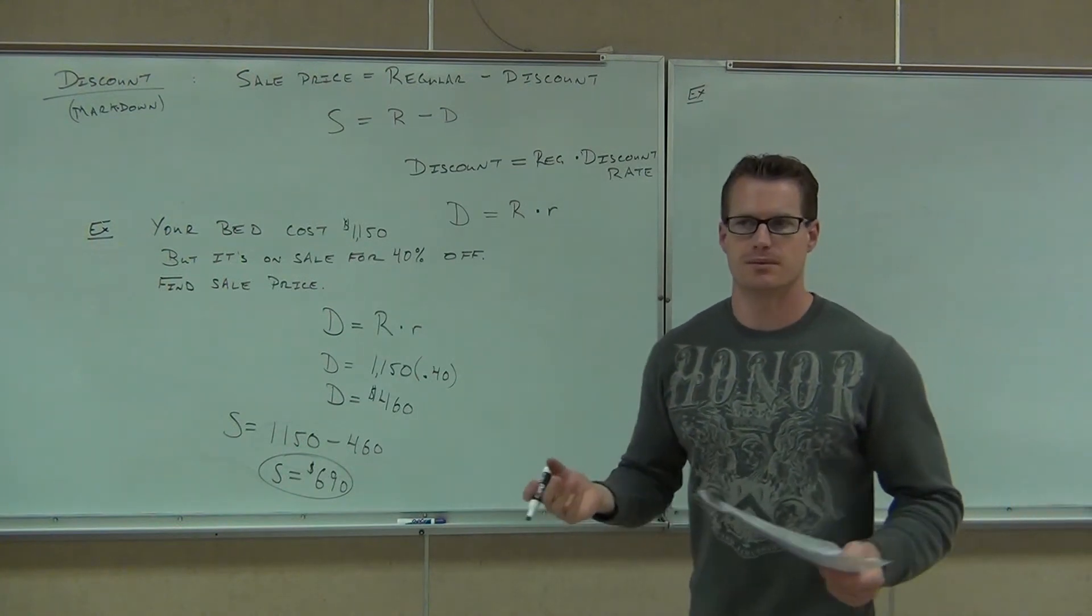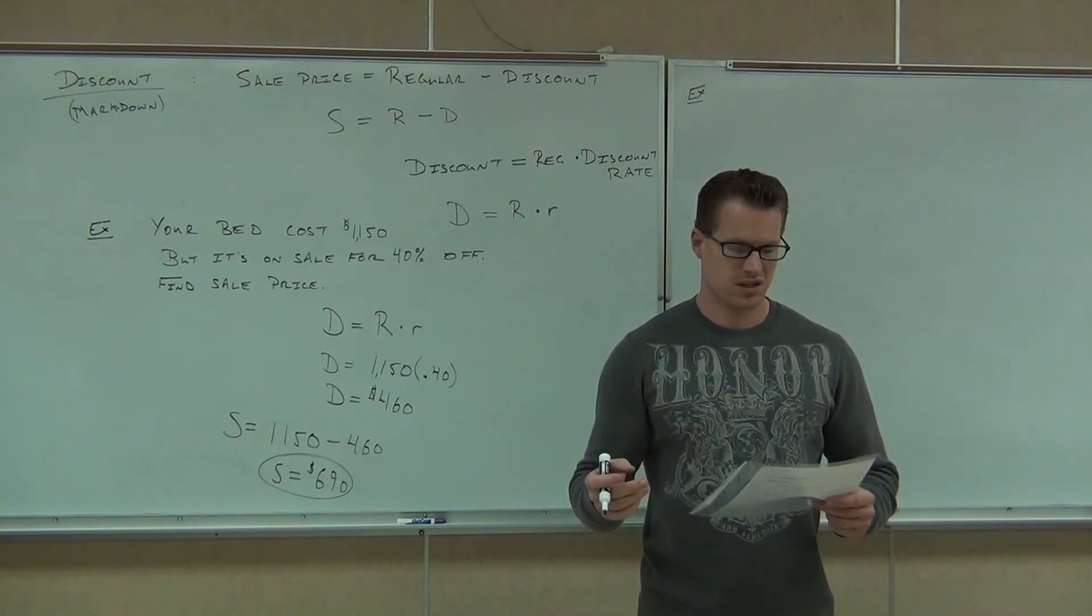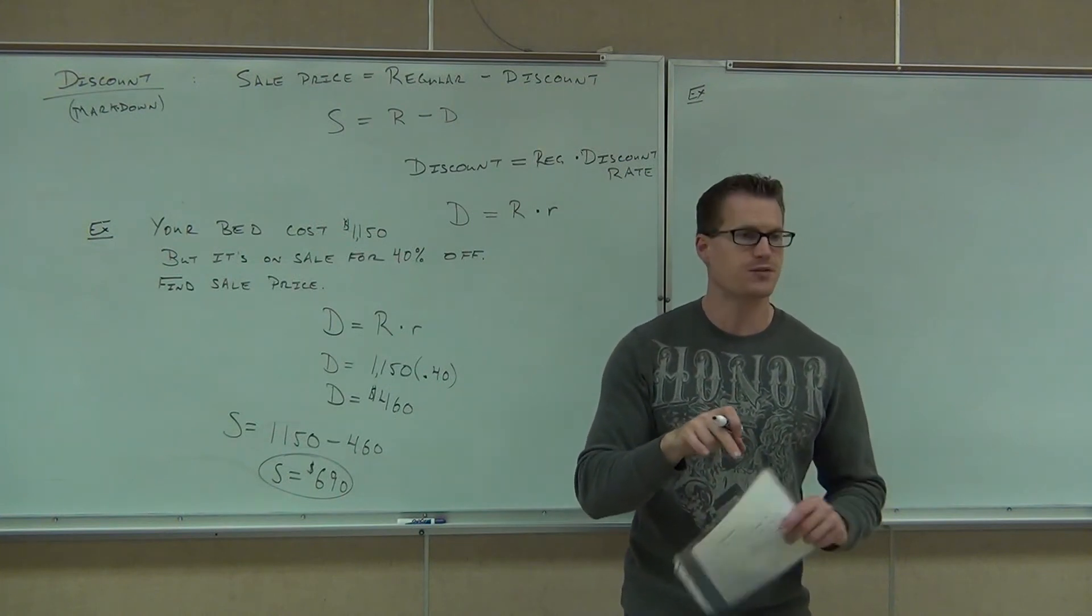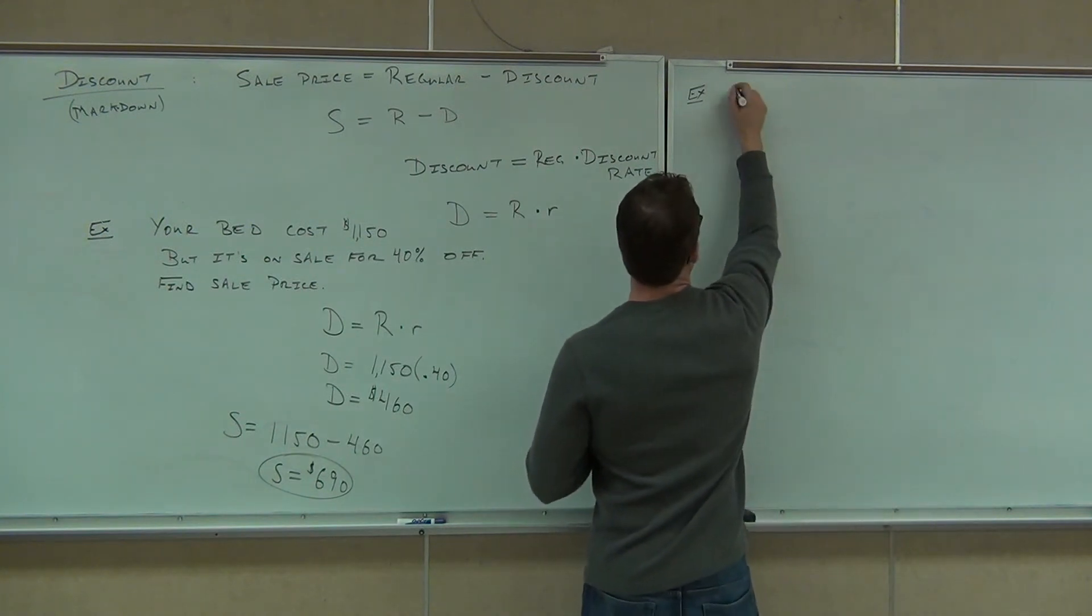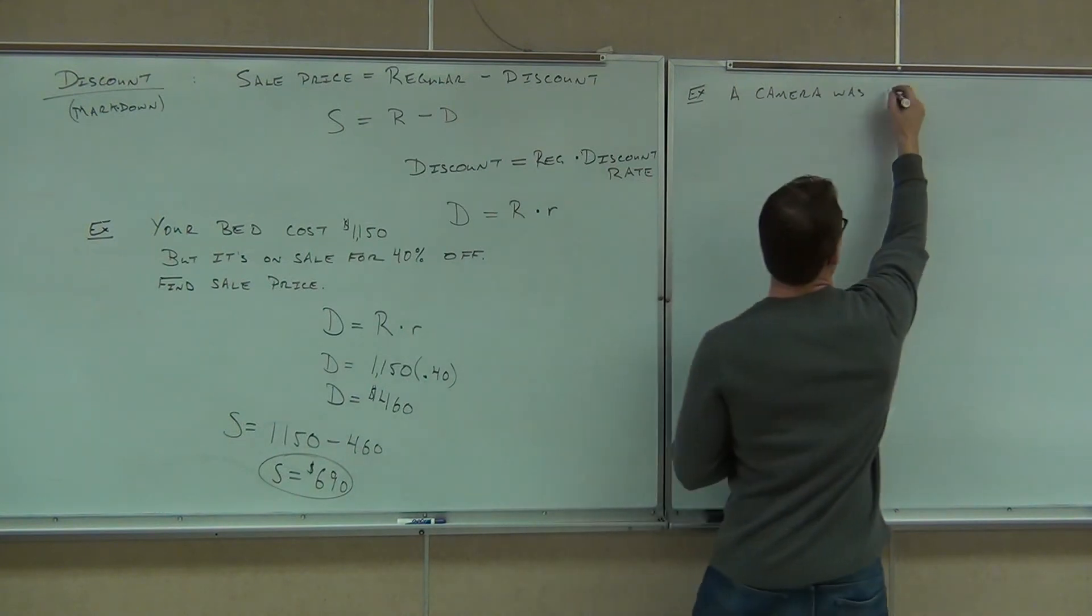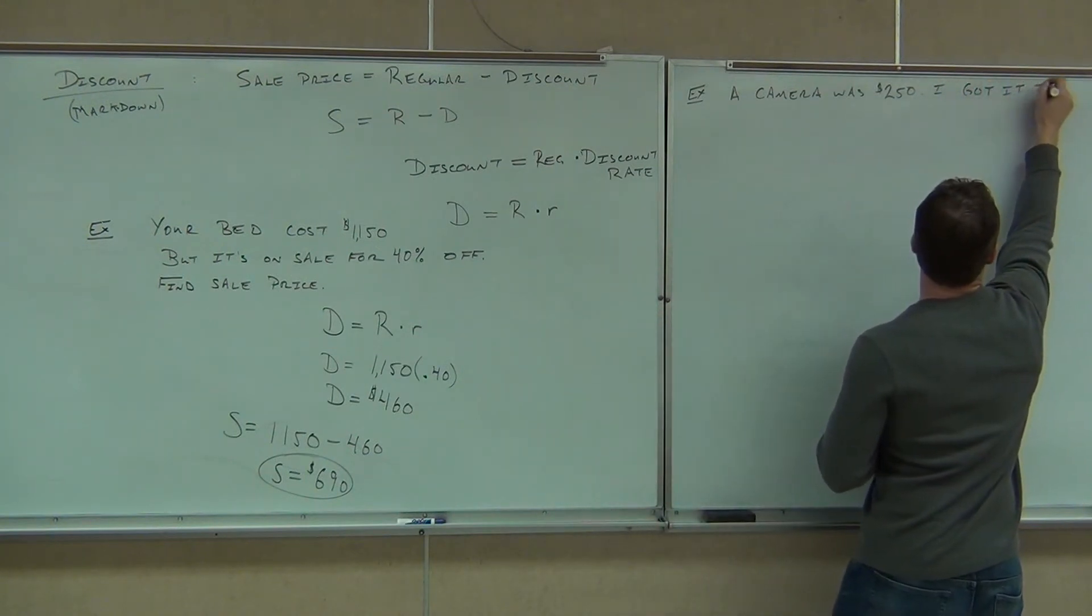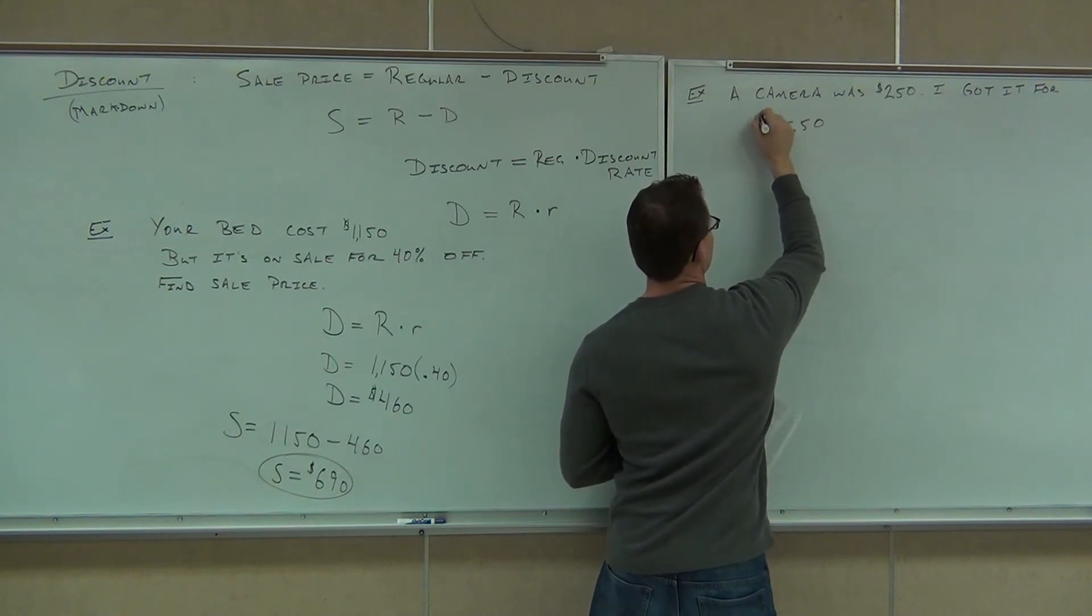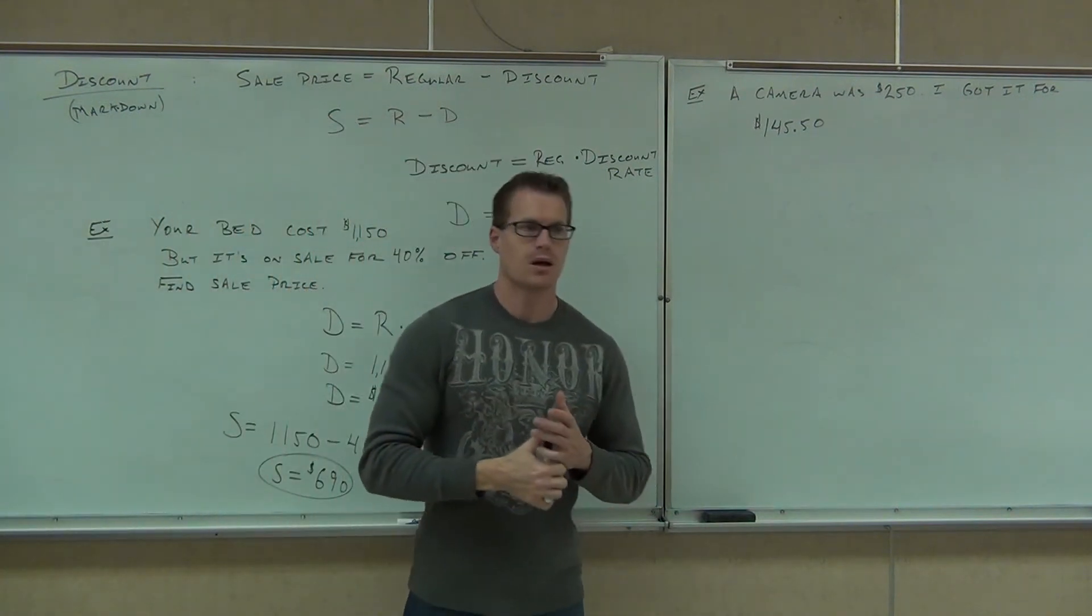So one other thing we can look at is this example. Let's say someone wanted to find out the discount rate. So for instance, I went into a store and they said it was 30% off. That's my right. They said it was 30% off, but I noticed that the camera was $250 on the sticker and my bill said $145.50. Can you figure out whether that's 30% off or not? That's what the question asks. So we'll look at that together.